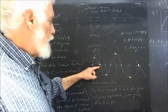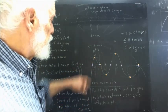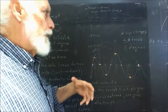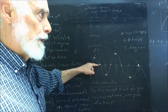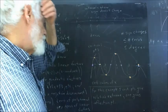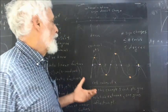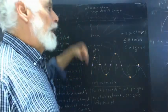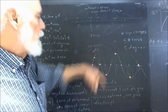That change of concavity is called an inflection point. When we have an inflection point at a critical point, we don't get a relative maximum or minimum. Inflection points can occur other than at critical points, but an inflection point at a critical point means that we don't have a relative maximum or minimum there.